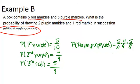And when you multiply that all out and reduce, you get 5 out of 36. So the probability of this happening, getting a purple marble, and then a purple marble, and then a red marble, is 5 out of 36. Thanks.